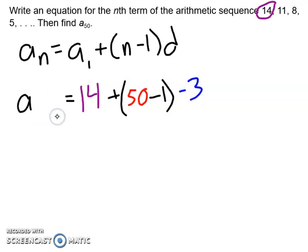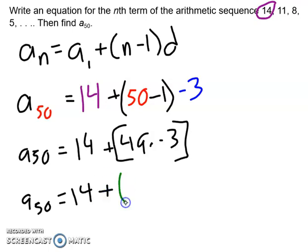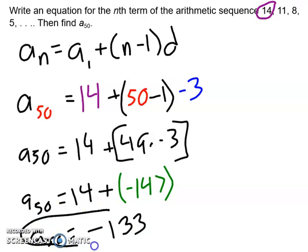So now we're just going to simplify. a_50 is equal to 14 plus 49 times negative 3. 49 times negative 3 is going to give us negative 147. And now we just add our two terms together. 14 plus negative 147. That's going to be equal to negative 133. That means that the 50th term of this sequence is negative 133. Sweet, folks. Nice job. Patterns are fun.